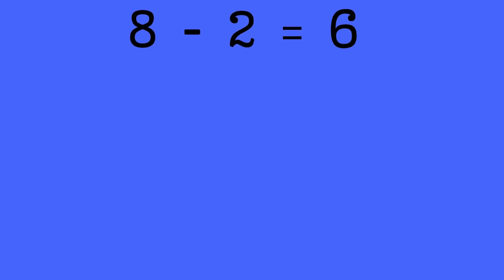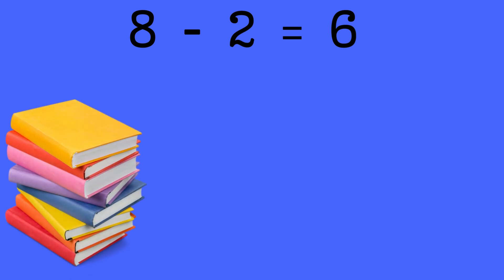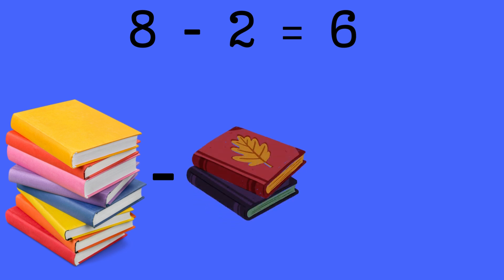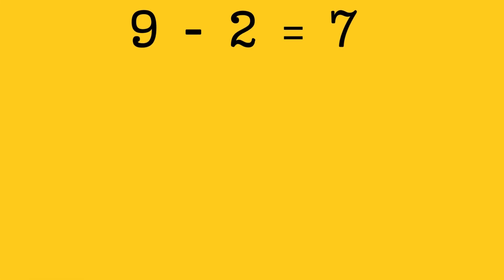8 minus 2 equals 6. Let's say you have 8 books and you put 2 back on the shelf. How many books left? Correct, 6 books.